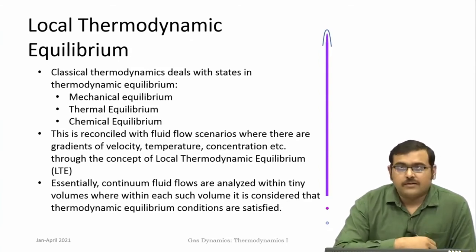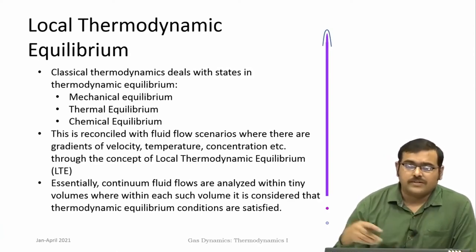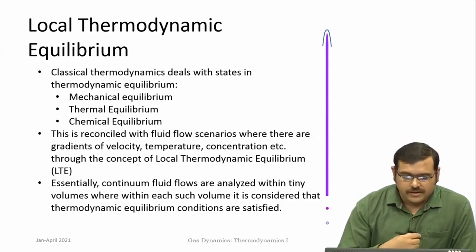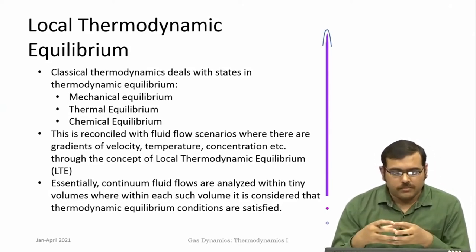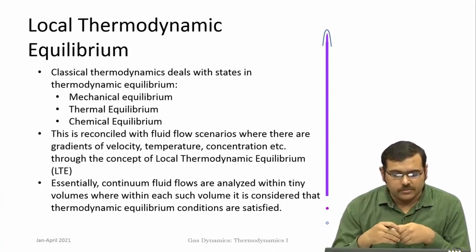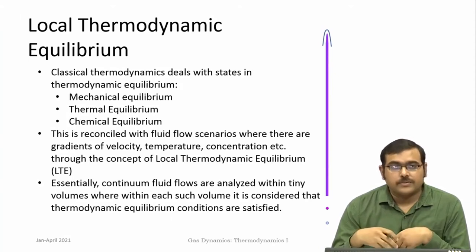When we look at fluid flow scenarios globally, there are large changes happening within the flow — forces are applied to make the flow move, with large changes in temperature and pressure. The equilibrium concept says gradients should be very small or negligible, but fluid flows happen only when there are gradients of pressure, and heat transfers happen when there are gradients of temperature. How do you reconcile classical thermodynamics with fluid flow? That is through the concept of local thermodynamic equilibrium.